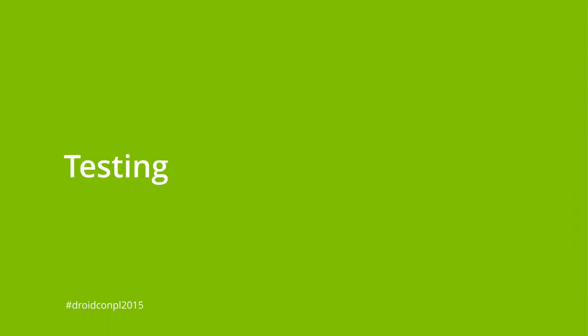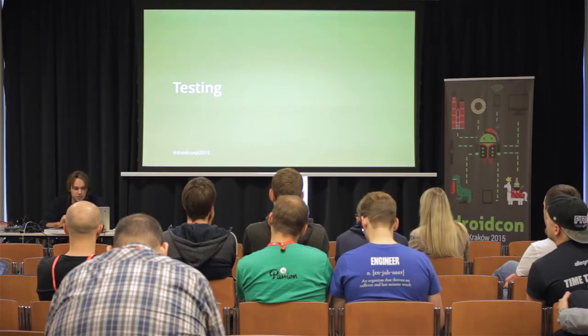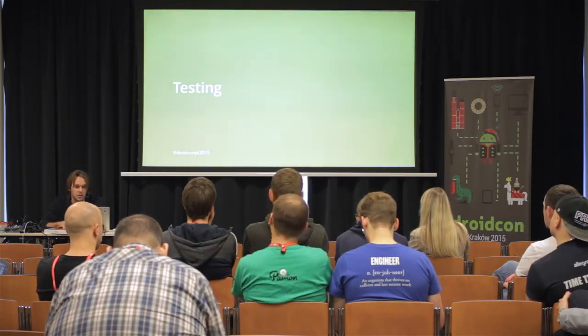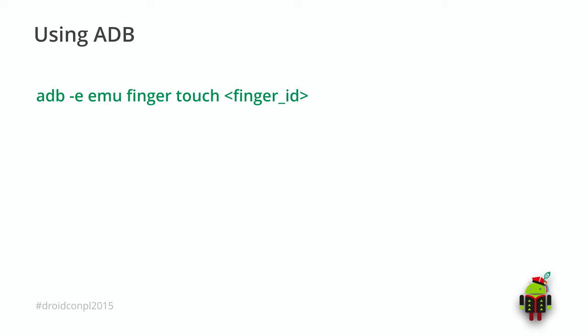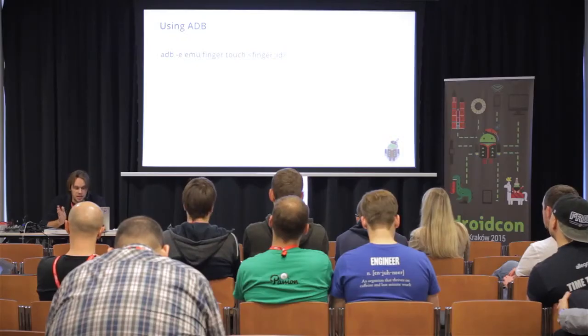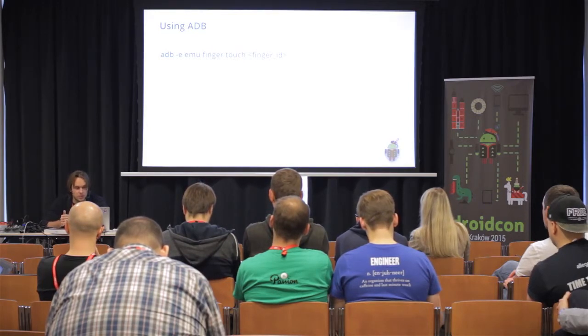Most of us don't have a Nexus 5X or 6P, because it's nearly impossible to buy them now. So how can we test our applications? It's possible using ADB. To support the new APIs, ADB can emulate a fingerprint touch — you just execute this command. Users can have more than one fingerprint in the system, so you can specify an ID and use it against different scenarios.